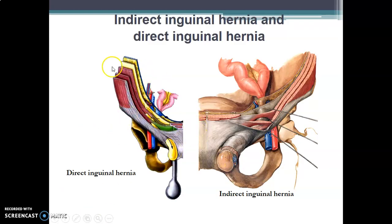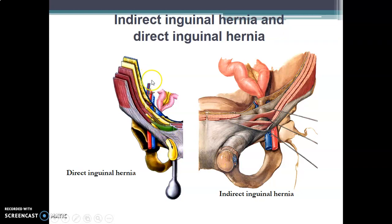This diagram shows the inguinal canal. You can see the external oblique abdominis, internal oblique, and transverse abdominis. The transverse abdominis and internal oblique form the conjoined tendon. This is the inguinal ligament, which is the inferior border. Here is the superficial ring. You can see herniation medial to the inferior epigastric vessels through Hesselbach's triangle, with bowels herniating through the posterior wall of the inguinal canal, passing through the medial portion to the superficial ring — this is direct inguinal hernia.